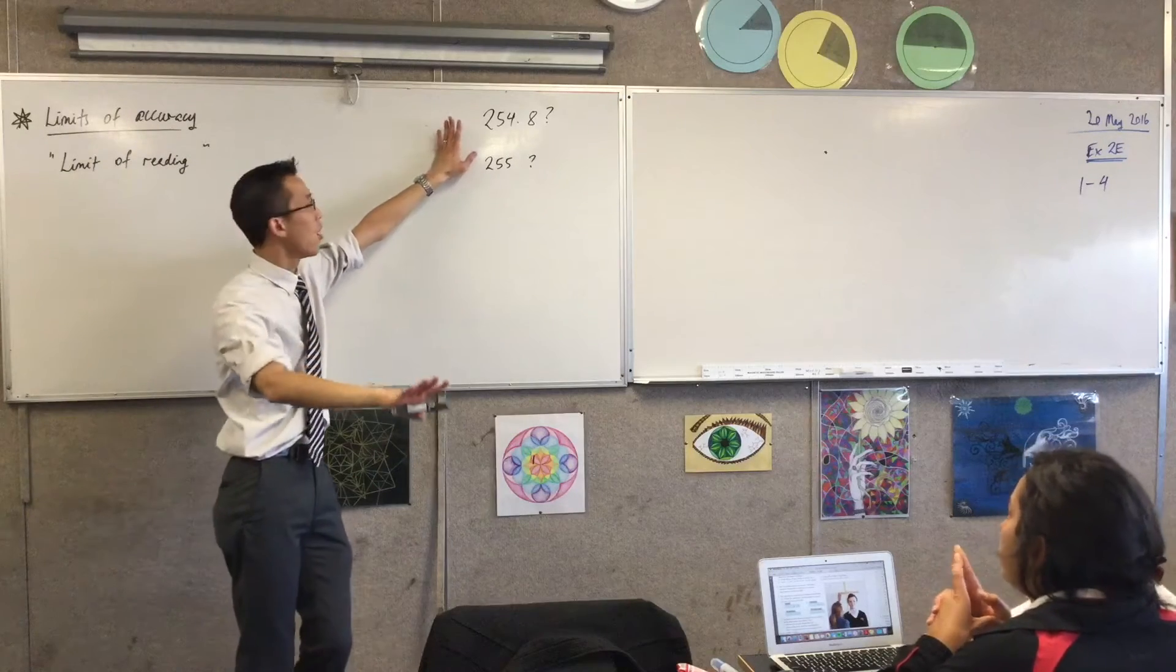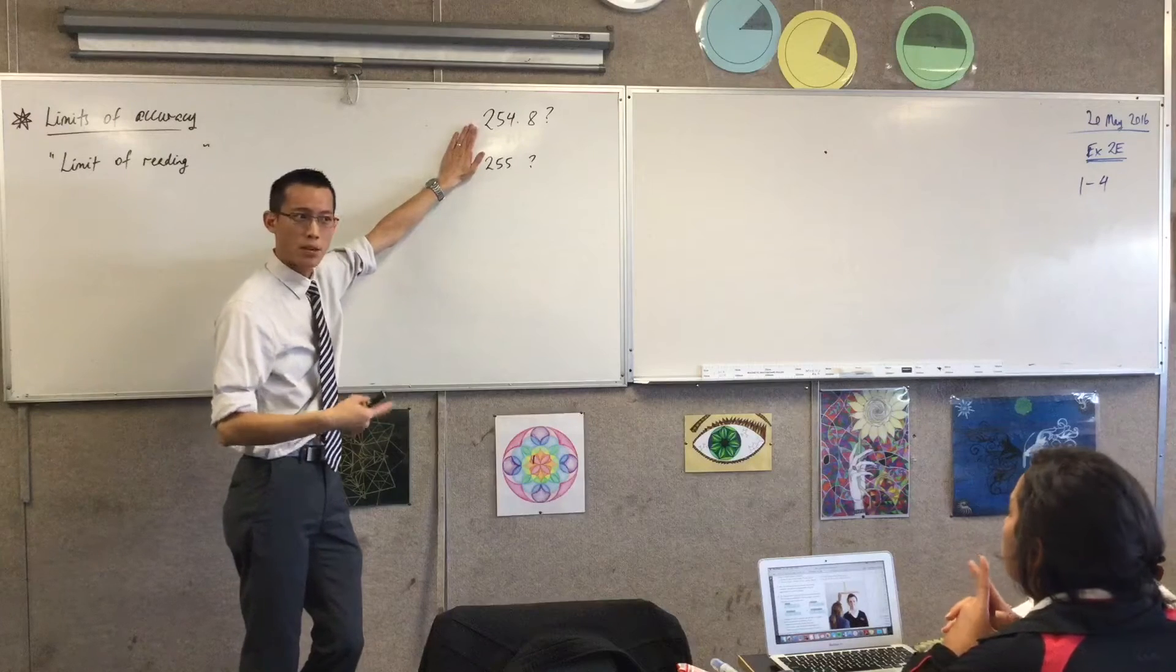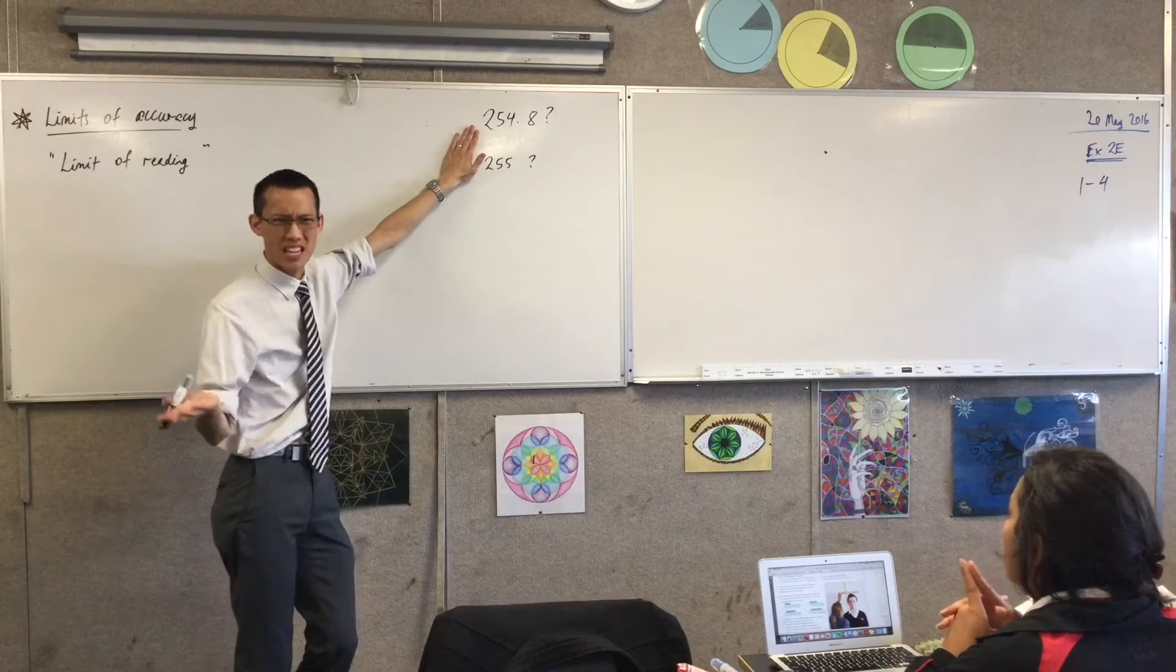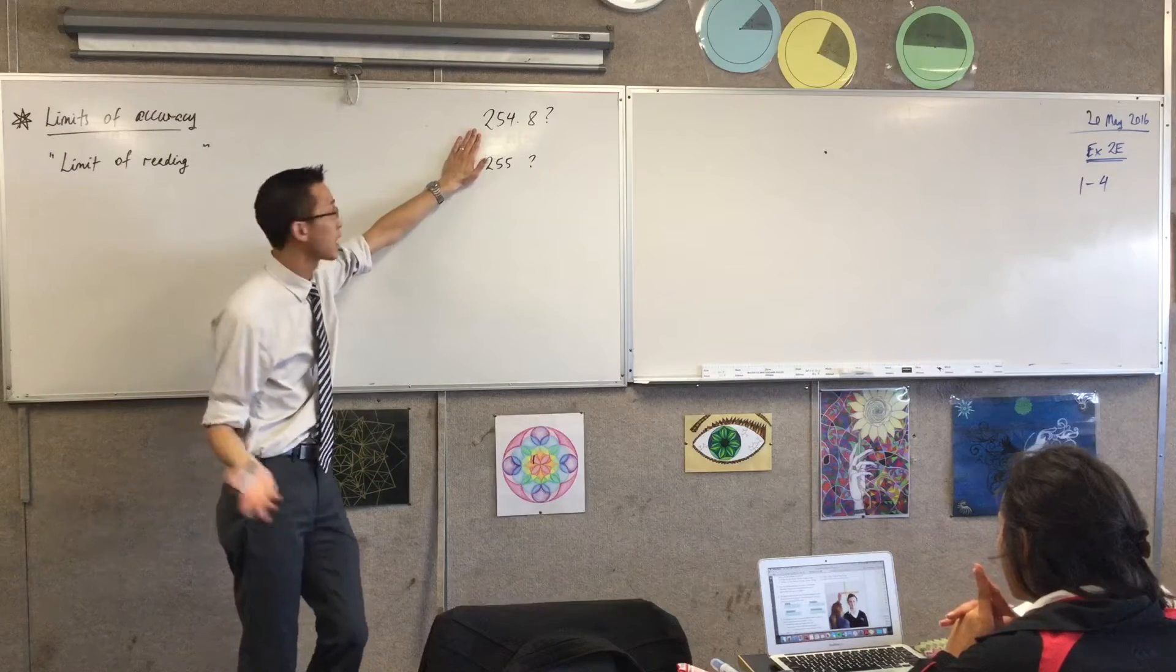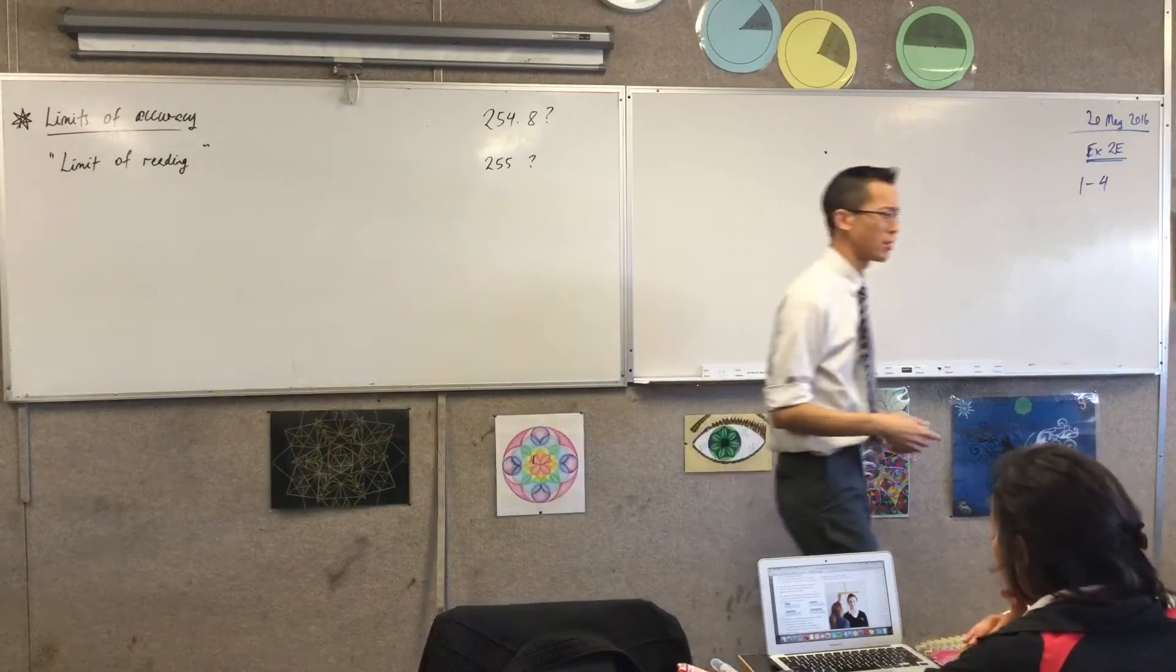Now, just let me know, on this first question, all of the measurements are in this ballpark, but they're all to the nearest, what is it, centimeters? Millimeters. Millimeters, okay, so all to the nearest millimeter. So, what are the actual numbers? Can you tell me,